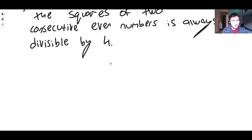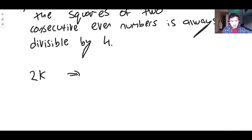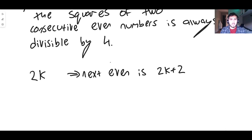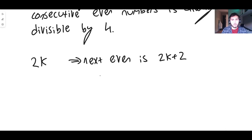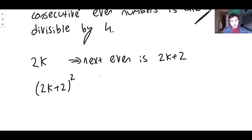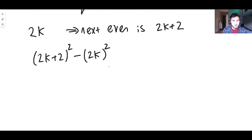We express even numbers in the form 2k. So our first even number is 2k, and the next consecutive even number is 2k plus 2, since consecutive even numbers differ by 2. We want the difference of their squares, so we set up (2k+2) squared minus (2k) squared, keeping the larger one first so the result is positive. This is the expression we need to expand and simplify.